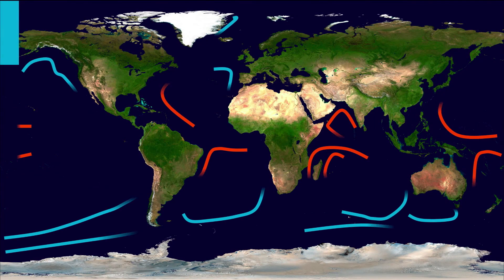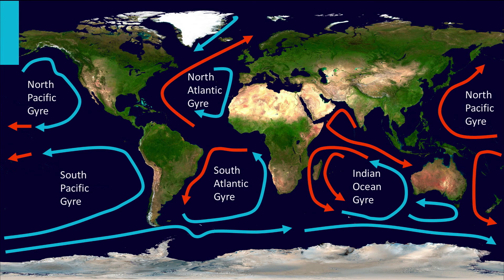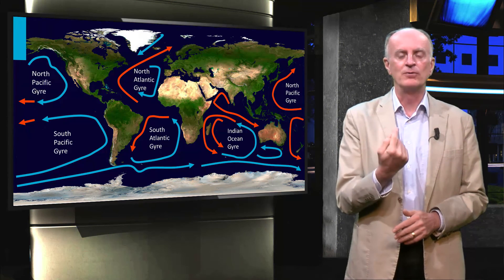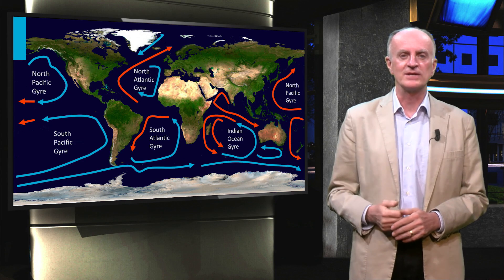As a result, ocean circulation is characterized by gyres, which are domains characterized by a circular water circulation.